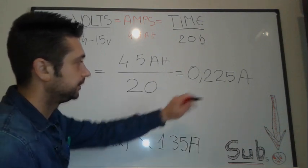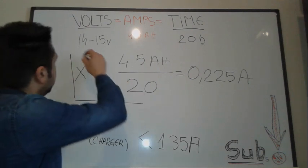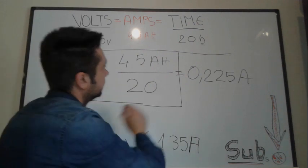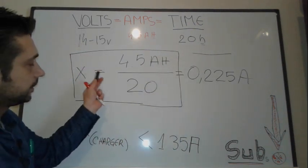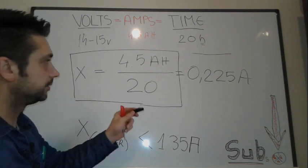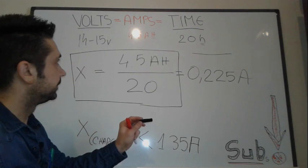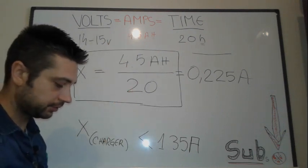So our charger to charge that particular battery in a safe time of 20 hours is gonna be minimum 0.225 amps. This is the formula to find your thing for this battery in particular, but for any different battery it's gonna be the same: amps over time.